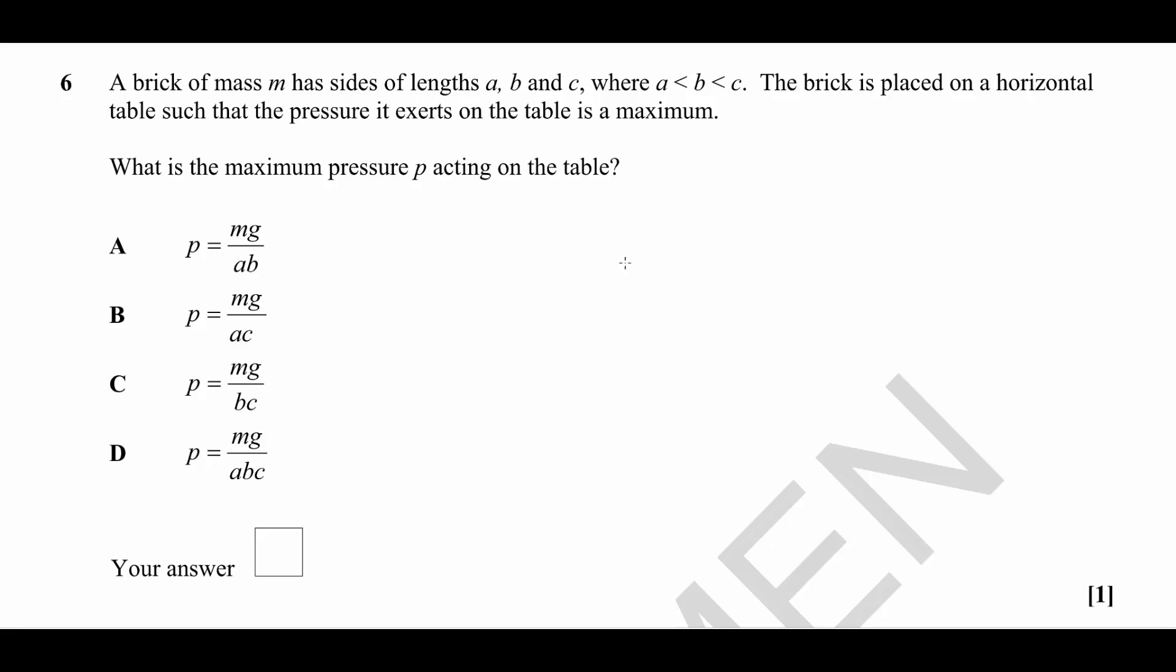It's been placed on a table so that the pressure exerted is a maximum. We need to work out which of these equations describes the maximum pressure acting on the brick. The first thing we need to reflect on here is that the pressure is equal to the force divided by the surface area that is on the bottom of that object.